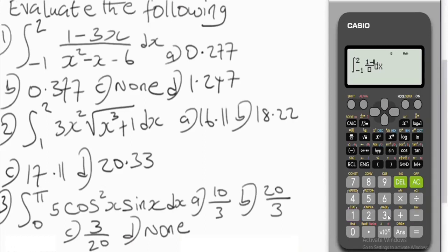In fraction we have 1 minus 3x, press alpha and this button for x to come out. Over we have x², alpha and this button for x, then press the button for square. We have minus x, alpha and this button, then negative 6.